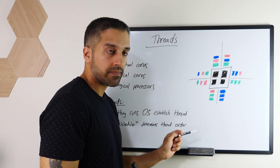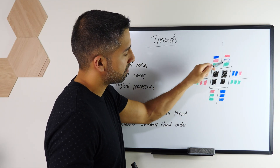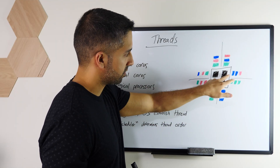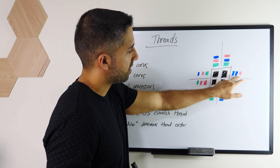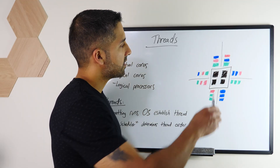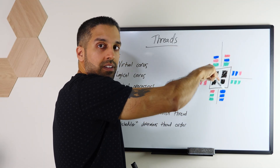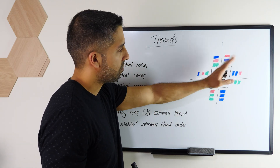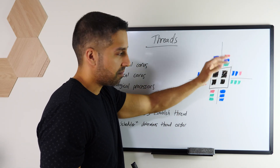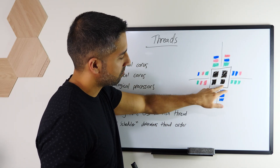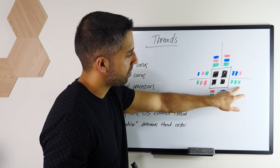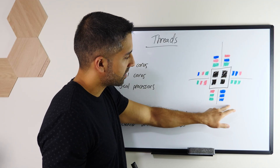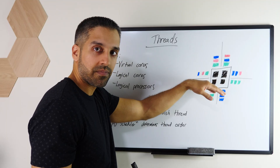Cores don't actually work on both threads at the same time — they're flipping between them very rapidly. Focusing on the top-right corner, we'll call this Core 1: it has two threads and it's flipping between them super rapidly, not working on both simultaneously. Core 2 is working on the operating system and video editing tasks, switching between them very rapidly.